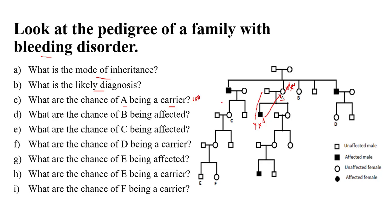What is the chance of B being affected? B is a female, so she cannot be affected. The chance of B being affected is 0%. What is the chance of C being affected? C is also female, so the chance of C being affected is also 0%. There is a chance of being a carrier, but not of being affected.